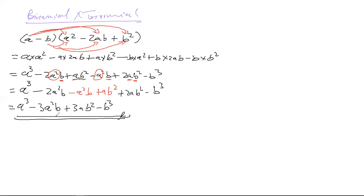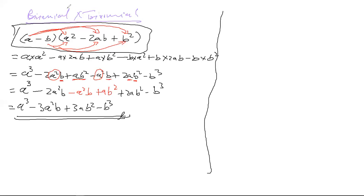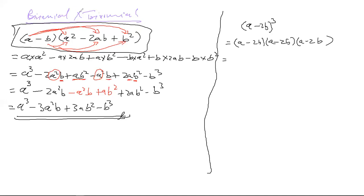We took the factorized form — one bracket times another is considered one term — and simplified it into four terms. Now for the last one I'll do with you: what if they give you (a − 2b)³? First, by laws of exponents, this becomes (a − 2b)(a − 2b)(a − 2b).